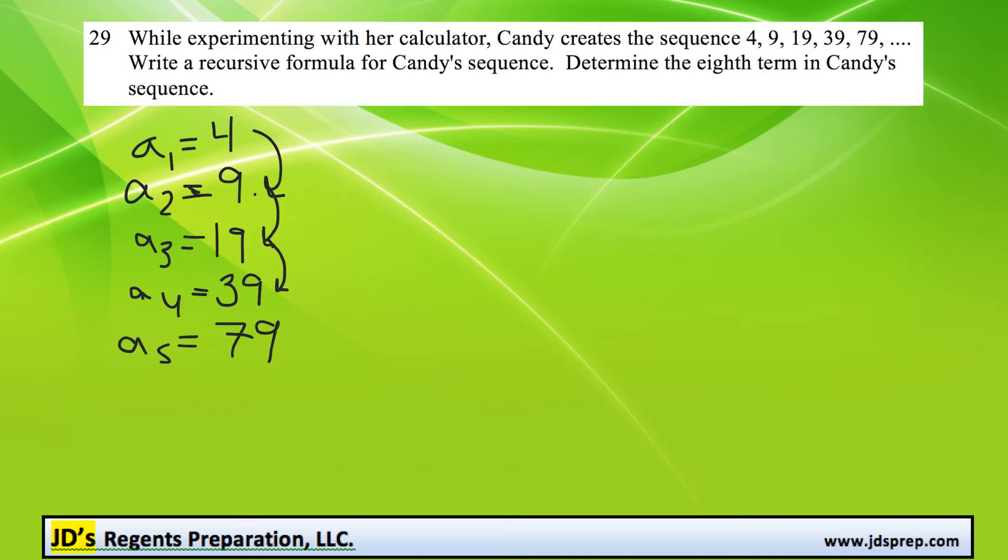So the general formula for this sequence would be a sub n. So for any term, we're going to double the previous term. That would be 2 multiplied by a sub of n minus 1. So you double it, and then add 1. And that's it. So that's the formula for the sequence.